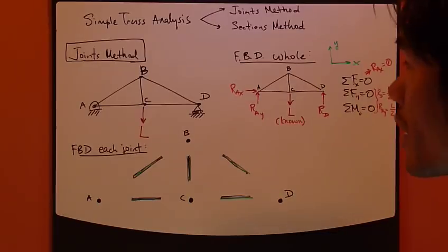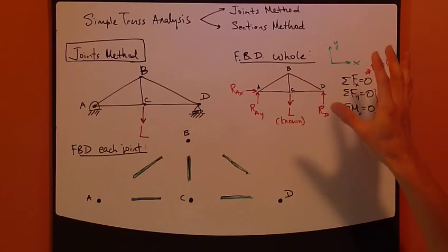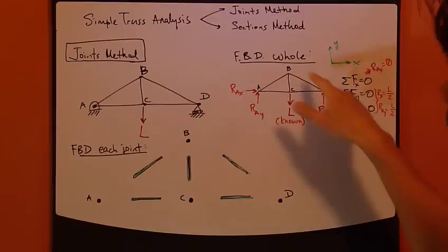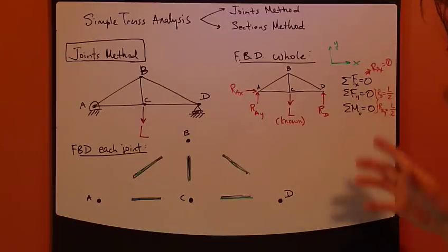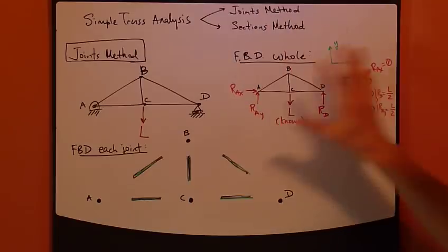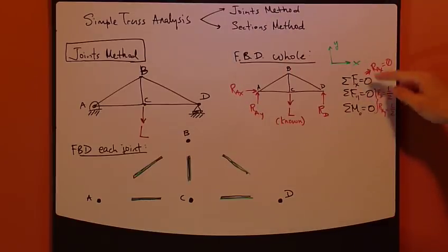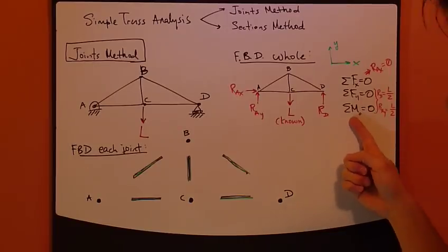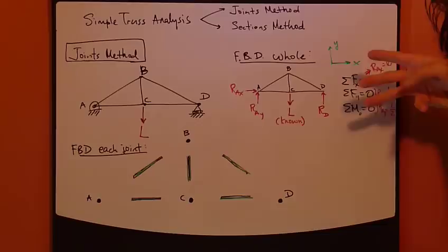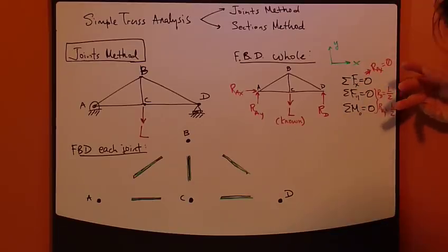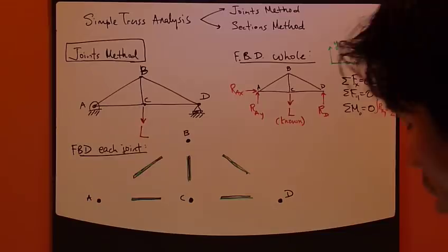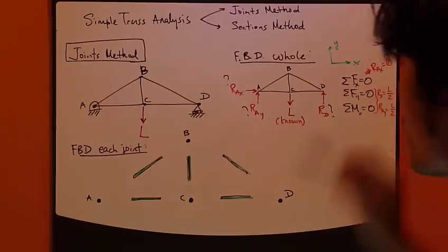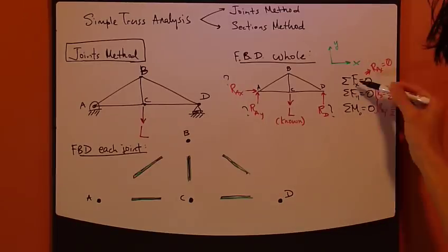With the free body diagram drawn, we apply the equilibrium equations. The whole truss must be in equilibrium, so everything must cancel out. In two-dimensional space we have three equations: sum of forces in x, sum of forces in y, and sum of moments about any point equals zero. These three equations must be satisfied simultaneously for the entire truss to be in equilibrium.